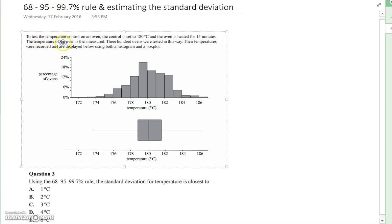To test the temperature control of an oven, the control is set to 180 degrees and the oven is heated for 15 minutes. The temperature is then measured. 300 ovens were tested this way, with temperatures recorded and displayed using both a histogram and a box plot.